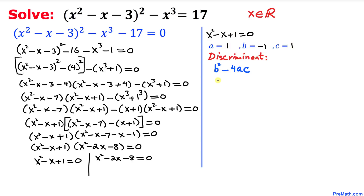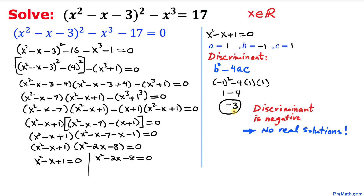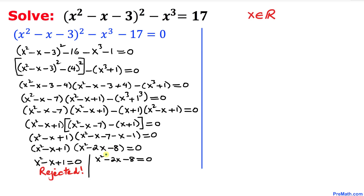Filling in: b squared minus 4ac equals (negative 1) squared minus 4 times 1 times 1, which gives us 1 minus 4, so the discriminant is negative 3. Since the discriminant is negative, there are no real solutions, so we reject this quadratic equation.